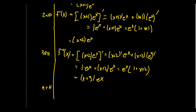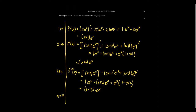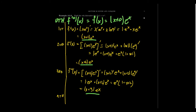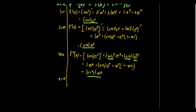Looking at the pattern: the 0th derivative is x·eˣ = (x + 0)eˣ, the 1st is (x + 1)eˣ, the 2nd is (x + 2)eˣ, the 3rd is (x + 3)eˣ. Each time we apply the product rule, the derivative of eˣ is eˣ, and the derivative of the linear factor contributes 1, incrementing the constant by 1. Therefore, the nth derivative of f(x) = x·eˣ is (x + n)eˣ.